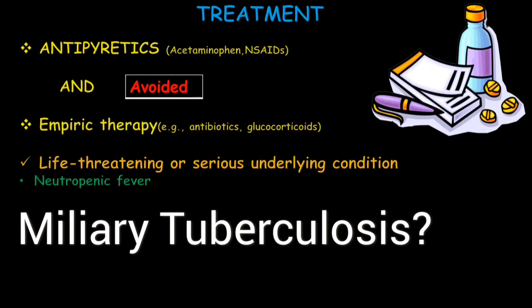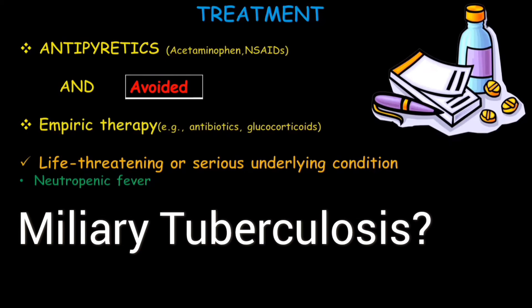What is miliary tuberculosis? It is a widespread hematogenous dissemination of Mycobacterium tuberculosis, which most commonly involves the lungs, CNS, bones, joints, liver, and adrenal glands. In the lungs it shows small nodules that resemble millet seeds, which is why we call it miliary tuberculosis.